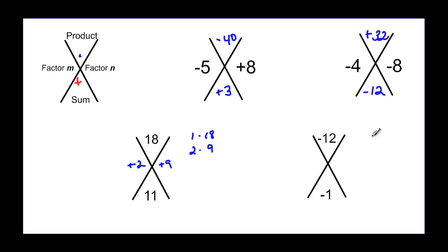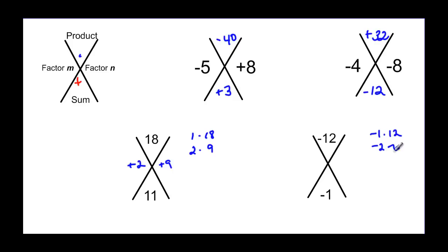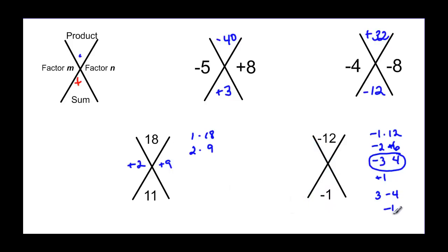Let's try with a product of negative 12 and a sum of negative 1. Negative 1 times 12 gives negative 11 — not right. Negative 2 times 6 is negative 12 but adds to positive 4 — doesn't work. Negative 3 times 4 gives a sum of positive 1 — close. If we change signs to positive 3 and negative 4, those add to negative 1. So our factors are negative 4 and positive 3.